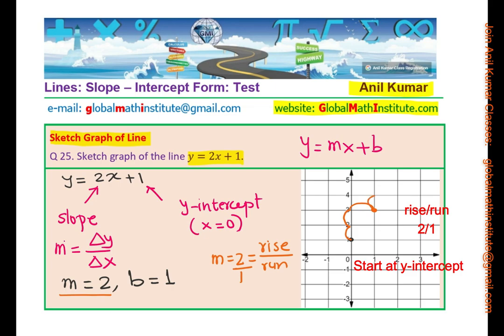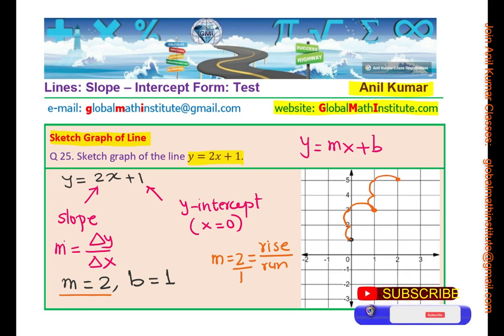Now again, you can go 2 up and 1 right, so you get another point. All these points fall in a line. Connecting them, we get a straight line, and that is how we are going to sketch the line. The slope of 2 helps us to get more points. You could also go left and then 2 down. At present, we will connect these points to sketch the graph, and the line will be as shown here.